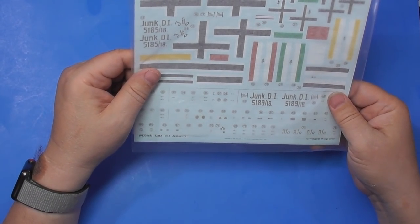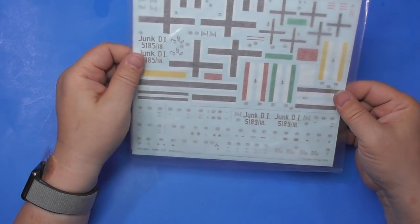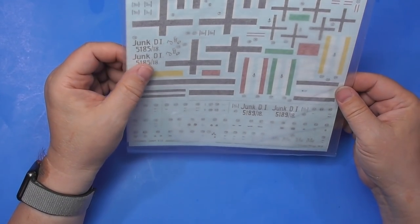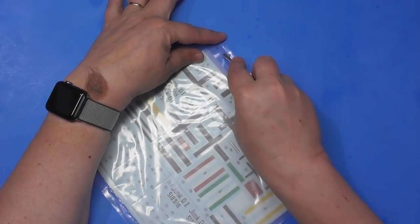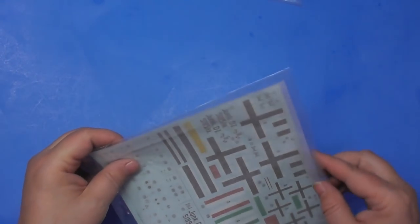Decals printed by Cartograph in Italy. So we're going to take them out. I thought we all know how great Cartograph is, but let's just take a look at them. I've never built a World War I plane before.